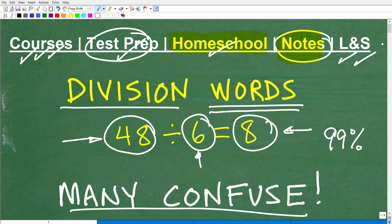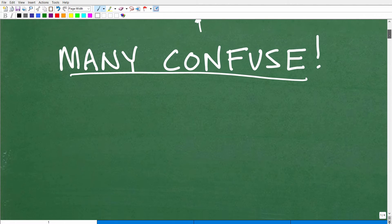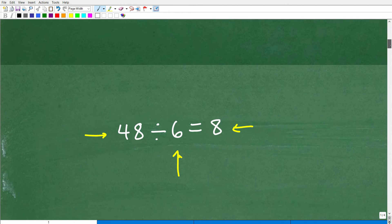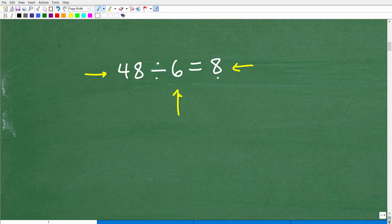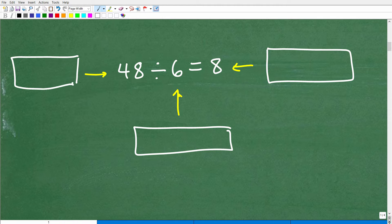But let's get into these division words. So I'm going to kind of give you a bit of a hint. Here is our problem: 48 divided by 6 equals 8. So this number is being divided by this number, and the answer is this. Let's review this again real quick. What are the words, the division words, that are going to be associated with these various numbers in their respective places when we're doing this division problem?